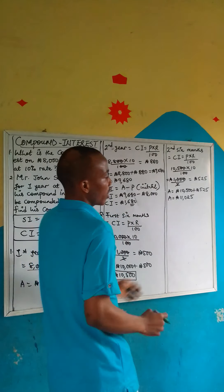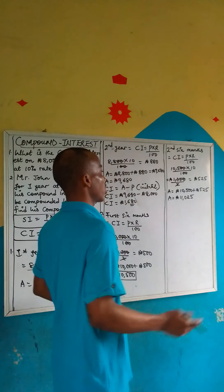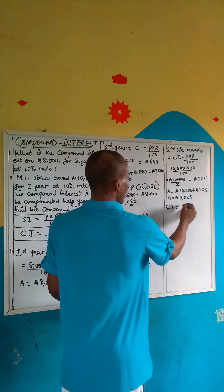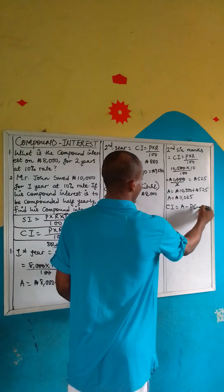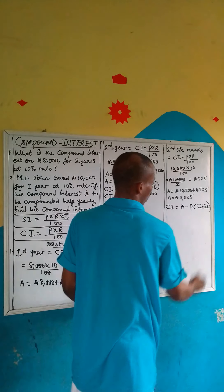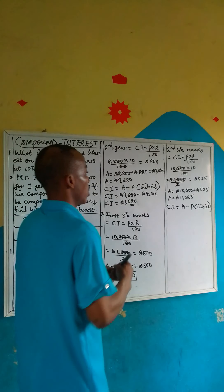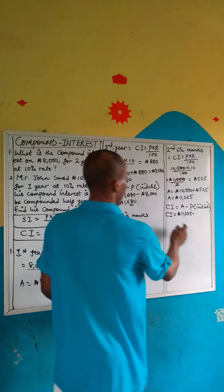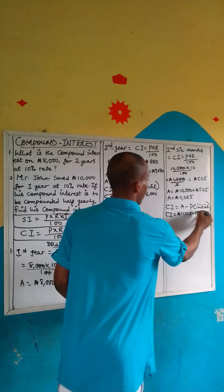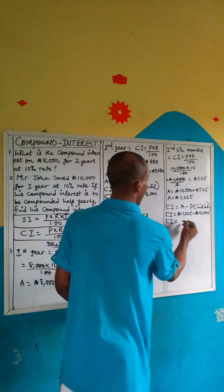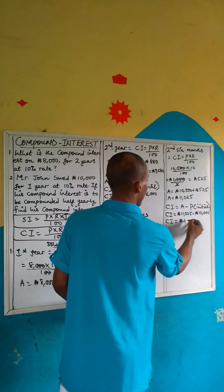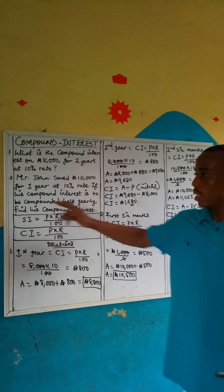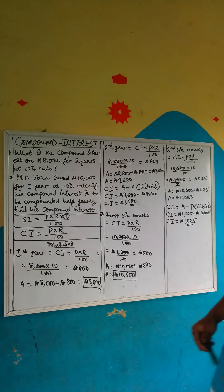Now I have the total amount. The compound interest equals the total amount minus the initial principal. The initial principal was 10,000. So CI equals 11,025 minus 10,000, which gives 1,025. That is his compound interest if compounded half yearly. I hope this video was really helpful to you.